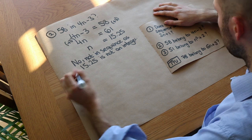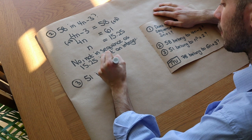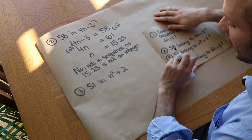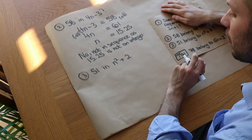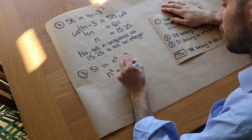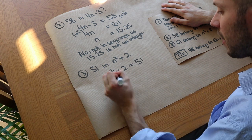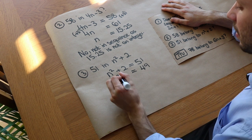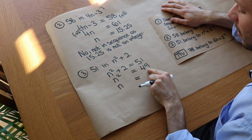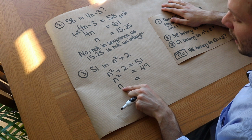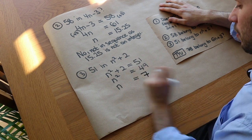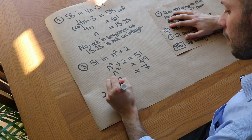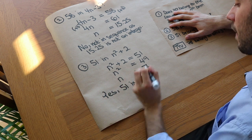Now: is 51 in the sequence n squared plus 2? This technique doesn't just work for linear sequences — it also works for more complicated sequences with an n squared term. We set n squared plus 2 equal to 51, subtract 2 from both sides to get 49, then square root both sides. The square root of 49 is 7 (we ignore minus 7 since n must be positive). Since 7 is a whole number, yes — 51 is the 7th term.